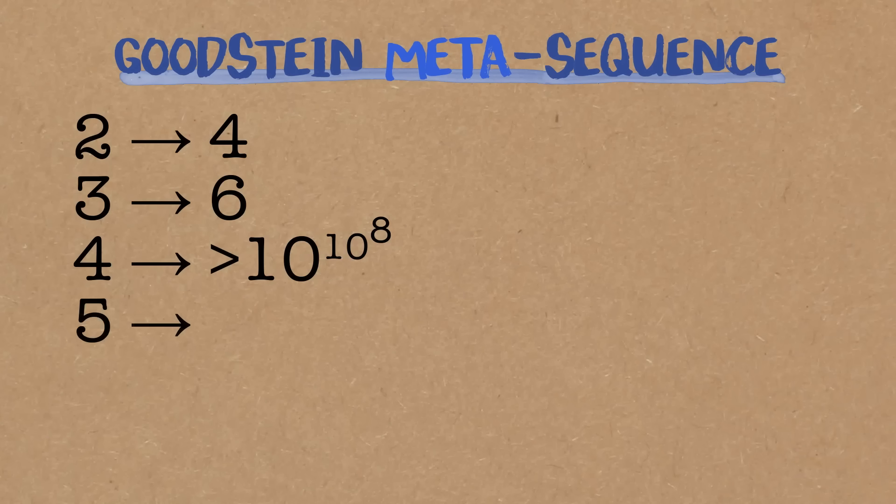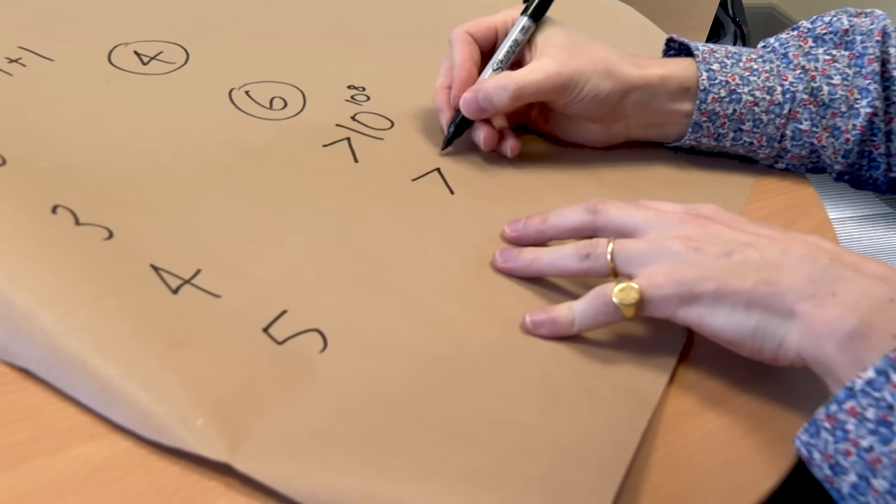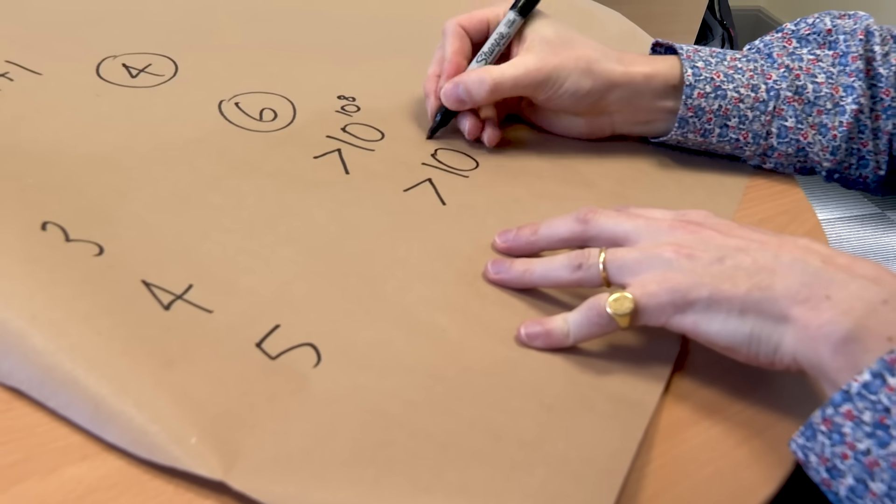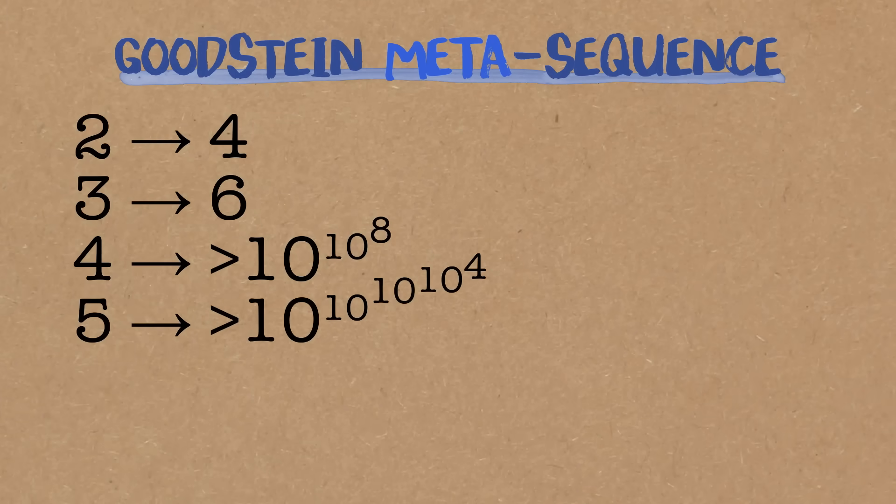So this thing, this Goodstein meta sequence, is a really, really fast-growing sequence. Extremely fast. Should we do the next one? So we start on 5. So this time, the length of the sequence is going to be bigger than 10 to the 10 to the 10 to the 4. But eventually it will die away. Eventually it will die away. Of course, neither you or I will be alive to see it. But if we kept doing it, kept doing it, kept doing it, it would eventually hit 0. Nuts.